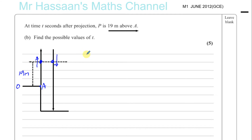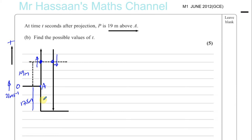We need to find the values of t when the displacement of the particle above A is 19 meters. Taking upwards as positive, since that is the direction of initial projection, the initial velocity u is 21 meters per second (positive). We don't need the height above the horizontal ground here. Gravity acts downward, so g equals 9.8.